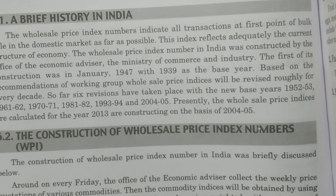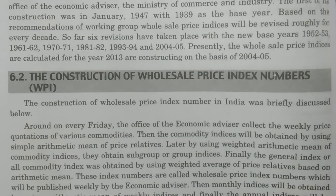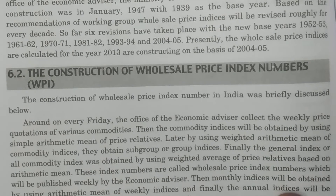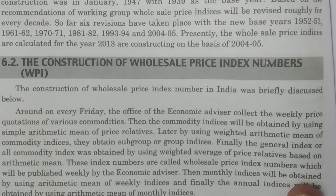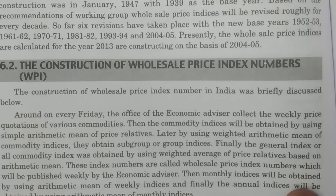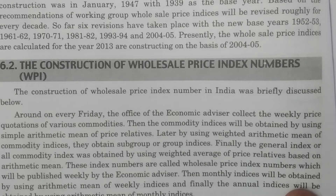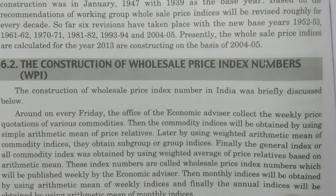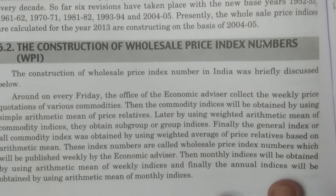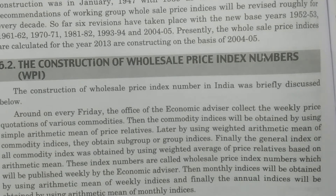Now we see the definition and the construction of Wholesale Price Index numbers. The Wholesale Price Index number is an index number calculated to explain the current structure of the economy — whatever index number is calculated for wholesale prices in the entire country is reflected in these index numbers. Now, how are these constructed? What is the method of constructing the Wholesale Price Index numbers?